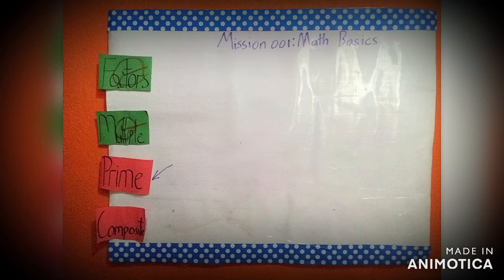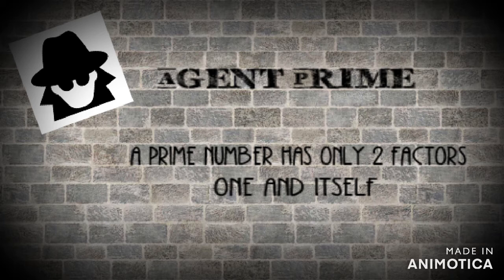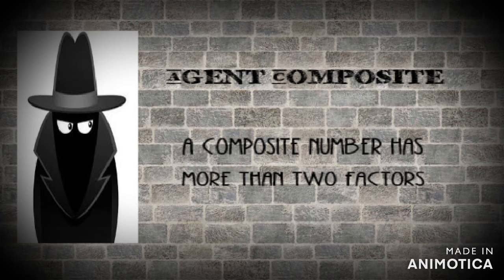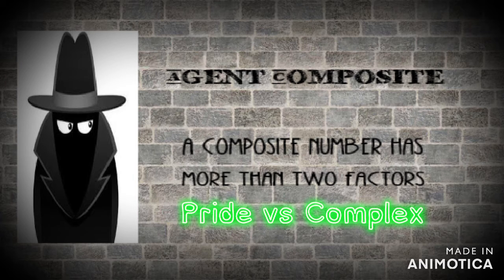Now let's move on to our last agents of math: prime and composite numbers. Agent Prime — a prime number has only two factors: 1 and itself. Agent Prime has a lot of pride and doesn't appreciate many factors getting in his way, so he only keeps two around. Agent Composite — a composite number has more than two factors. Unlike Prime, Agent Composite is more complex and likes to be surrounded by many factors, at least three of them.